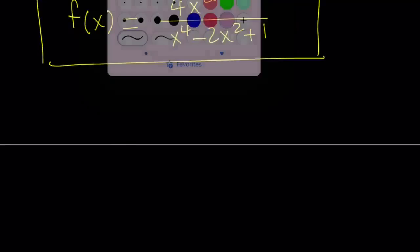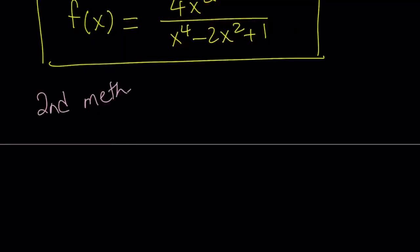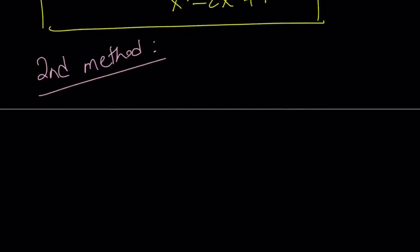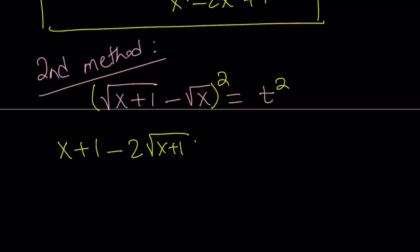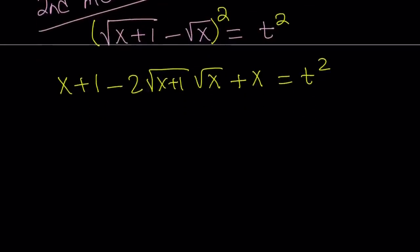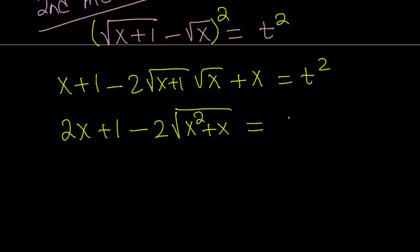Let's look at the second method. It's very similar but varies in how we solve the equation. We again set √(x+1) minus √x equal to t. Instead of putting the radicals on different sides, I'm just going to square both sides directly. We get: (√(x+1))² minus 2·√(x+1)·√x plus (√x)², which gives us x plus 1 minus 2√(x²+x) plus x, equal to t². Simplifying: 2x plus 1 minus 2√(x²+x) equals t².